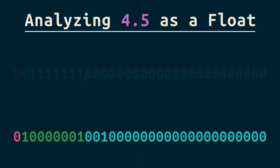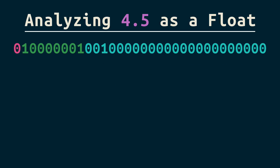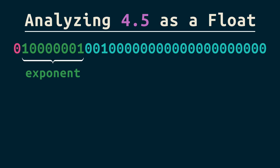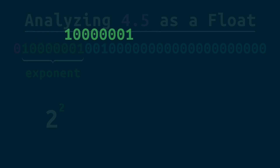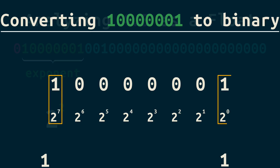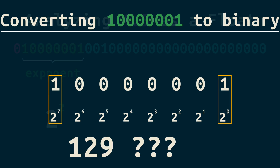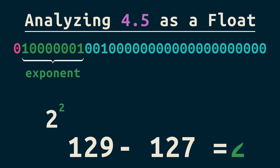Let's focus on the 4.5; we'll get back to 1.0 after we understand each part. These 8 bits are the exponent. We like binary, or base 2, in computers, so the exponent goes on a base of 2. Now 4.5 is awfully close to 4. What number will get us to 4? It's 2. So we might expect a 2 in our exponent. But this binary is equal to 129. Let's just subtract off 127, and now we've got 2.